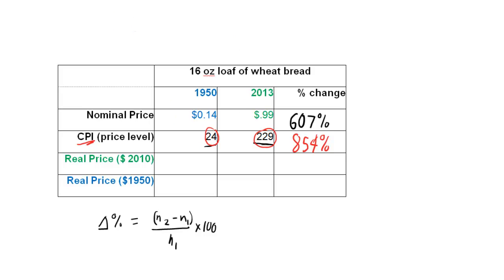So let me go in here and fill in what we know. The real price, oops, this should say the real price in 2013 terms. I'm sorry for not updating that. The real price in 2013 terms, for 2013 is 99 cents. That can drop straight down. That doesn't change because it's already in 2013 terms. Make sure you put that dollar sign there. And the real price for 1950 is 14 cents. That can drop right down. We don't need to change anything there, so halfway done.